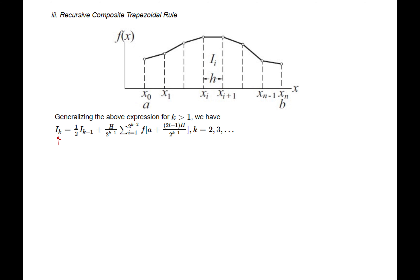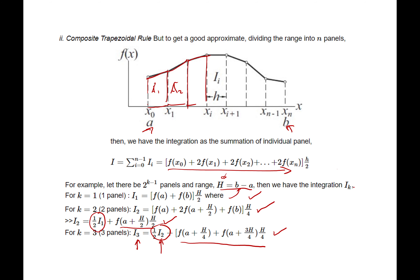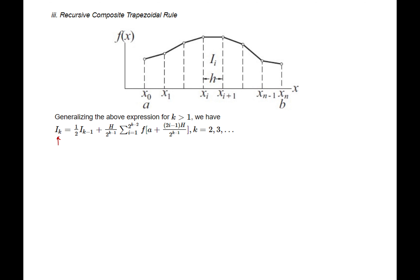Instead of recomputing everything, we step through it recursively: first compute i1, then add new terms to get i2, then add more to get i3, and so on. It's just a recursive algorithm. That's the idea behind this algorithm — each step reuses the previous result.